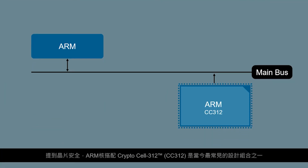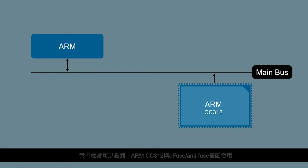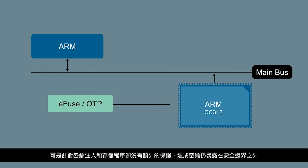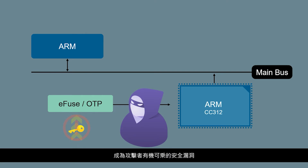Speaking of chip security, ARM Core with CryptoCell 312 is one of the most common design combinations found today. Typically, ARM CC312 is used with eFuse or anti-fuse without additional protections for key injection and storage. Therefore, the key remains outside the boundary, creating a potential breach point for attackers.